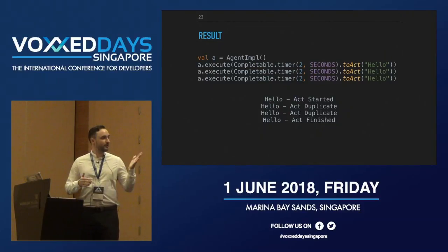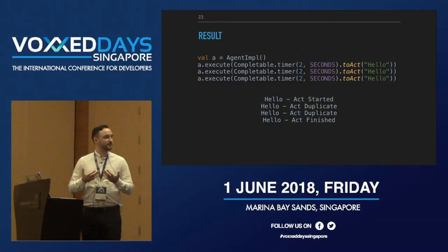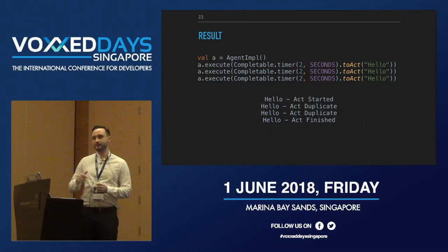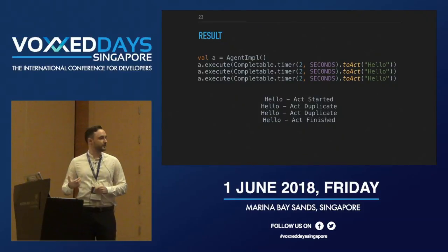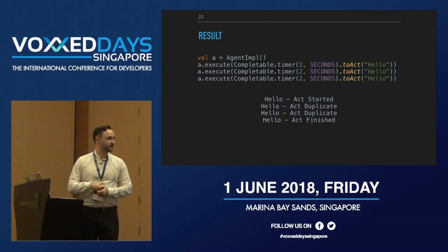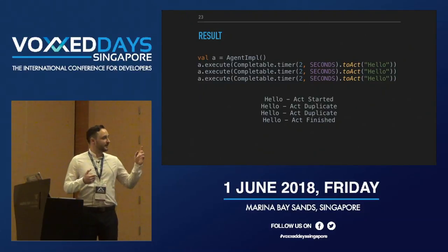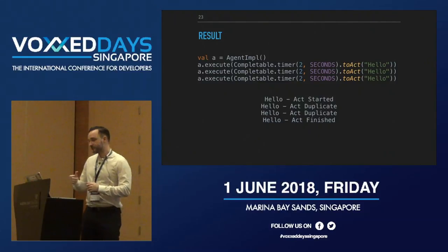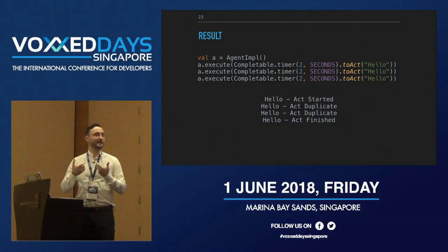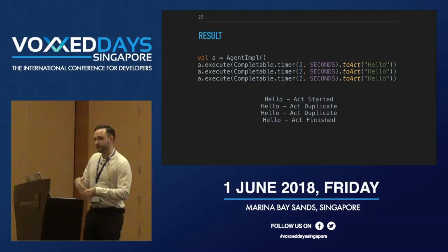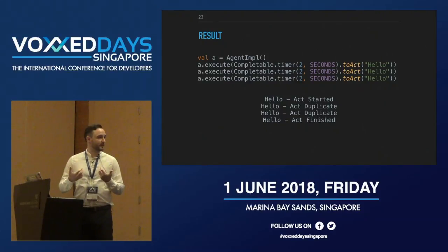Our implementation now allows us to prevent duplicate jobs from being executed. In a simple example, we create three Completables converted to Acts with the id 'hello'. The first time we pass the Completable to our Agent, execution starts; the second and third times we just log that the job is a duplicate and do nothing. Once the first job finishes, we've achieved our first goal: preventing duplicated jobs from being launched.